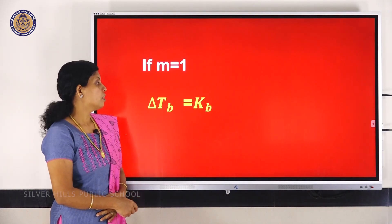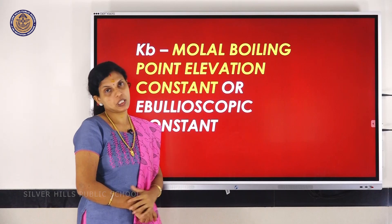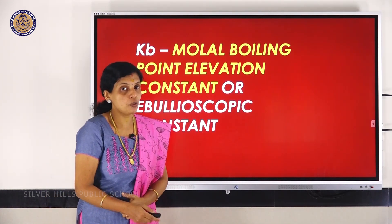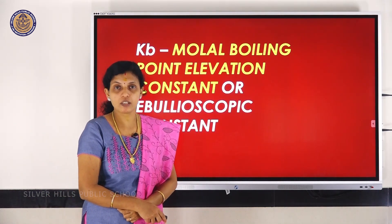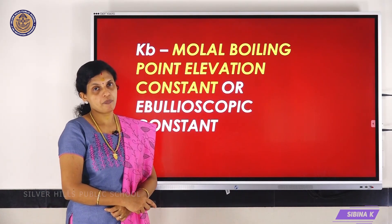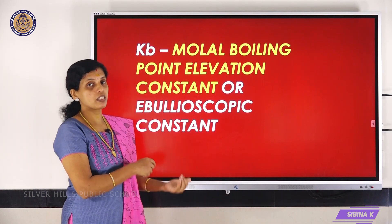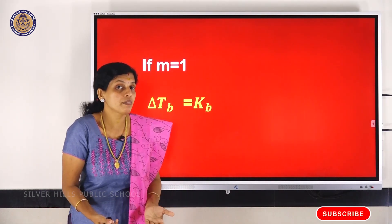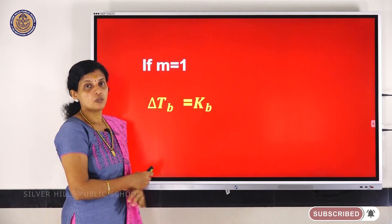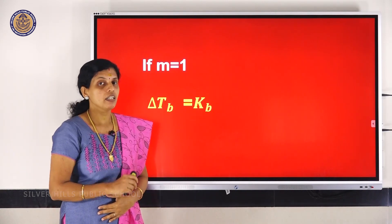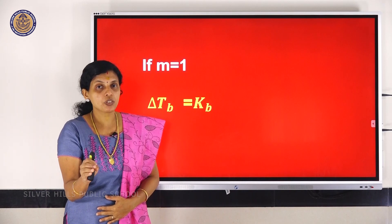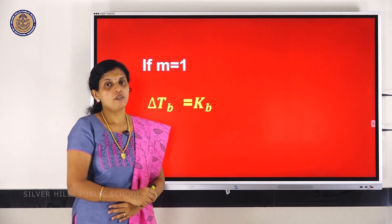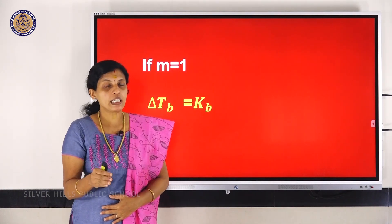Here Kb is called the molal elevation boiling point constant, or it is also called the ebullioscopic constant. If m = 1, then delta Tb = Kb. So the ebullioscopic constant is defined as the elevation in boiling point for a one molal solution — that is, when one mole of solute is dissolved in 1000 grams, or 1 kilogram, of solvent.